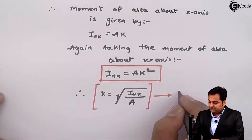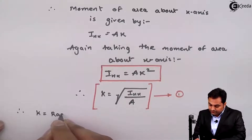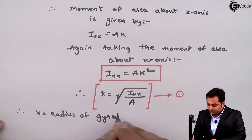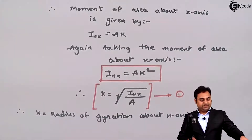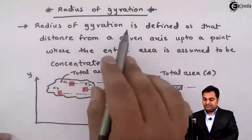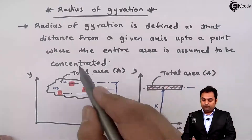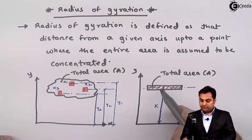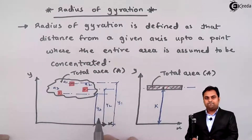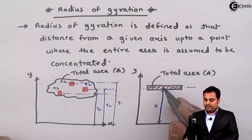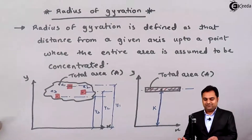So this I will keep as equation number 1, and therefore k is equal to the radius of gyration about the x-axis. As written in the definition, the radius of gyration is defined as that distance from a given axis — that is the x-axis here — up to a point where the entire area is assumed to be concentrated. Here I am assuming the entire area is concentrated at this point. So the area, denoted by capital A, is at a distance k, and this k is nothing but the radius of gyration.